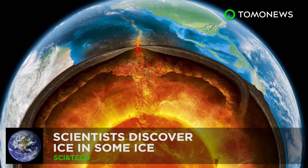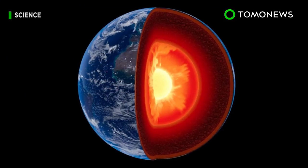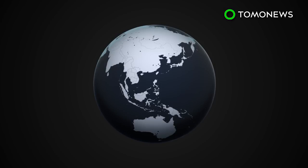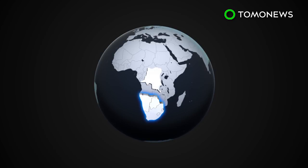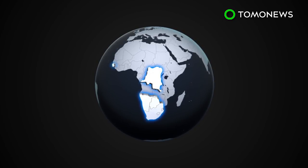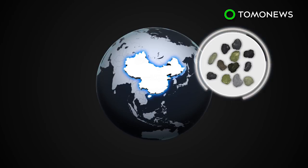Scientists discover ice in some ice. That's deep. Geologists unearth impure diamonds from mines in southern Africa, Zaire, Sierra Leone, and China, and discover they contain ice crystals, which means pockets of water may exist deep in the Earth's mantle.